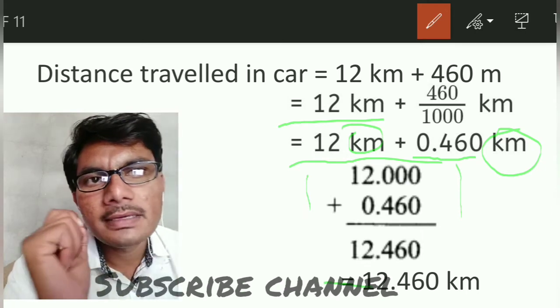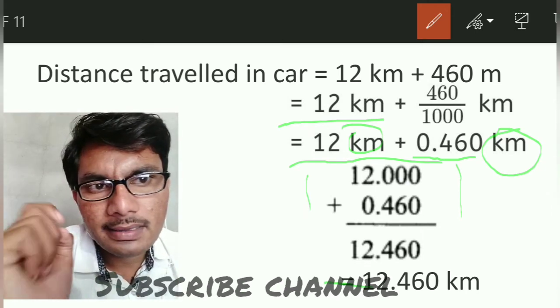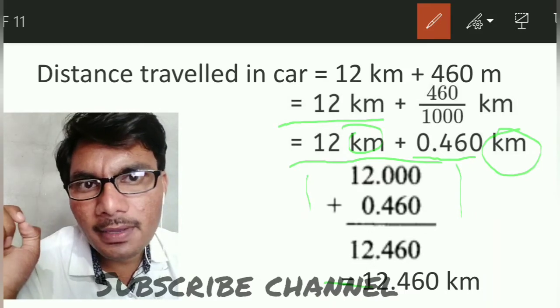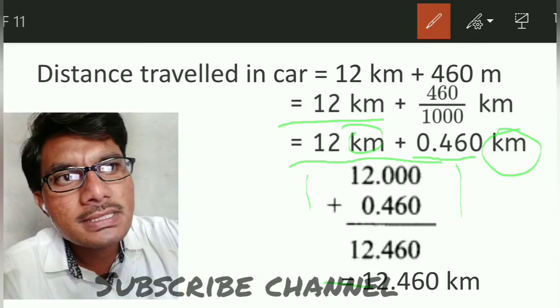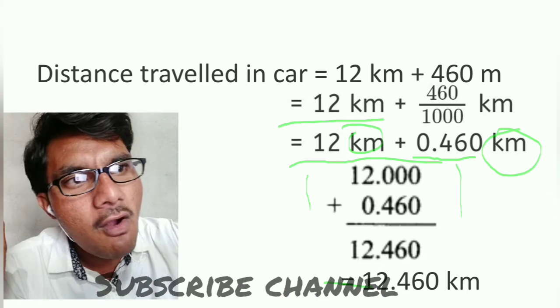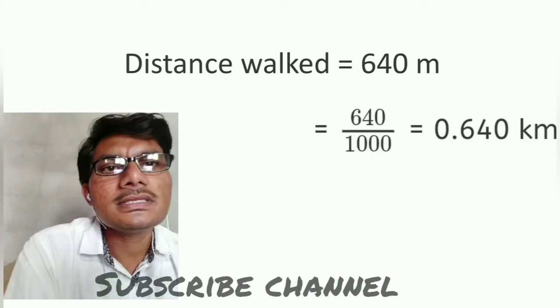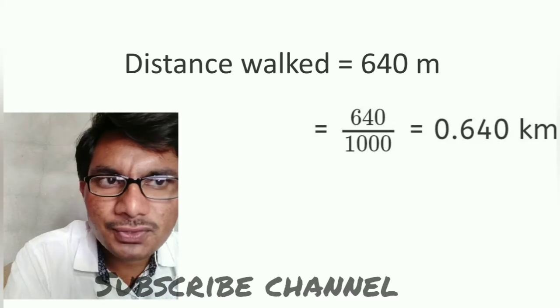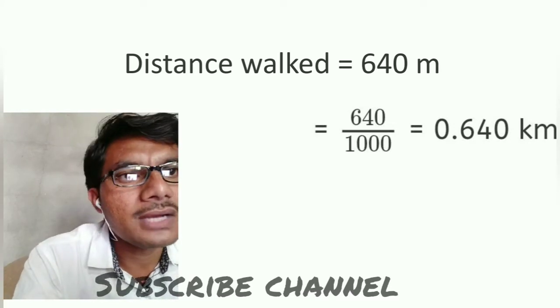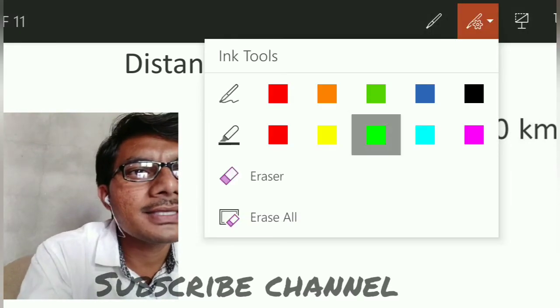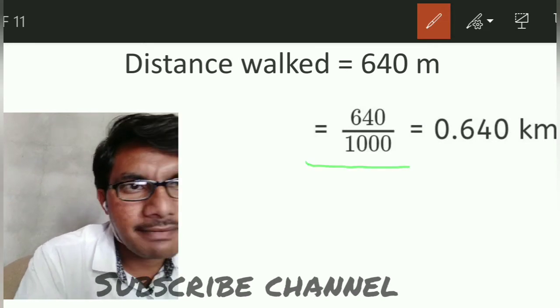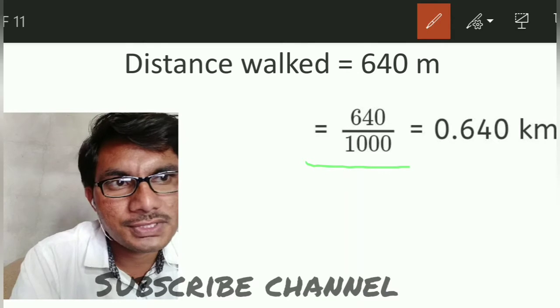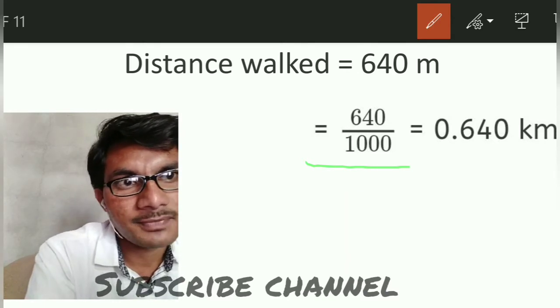Distance covered by walk is 640 meters. To convert to kilometers, divide by 1000. This gives us 0.640 kilometers.